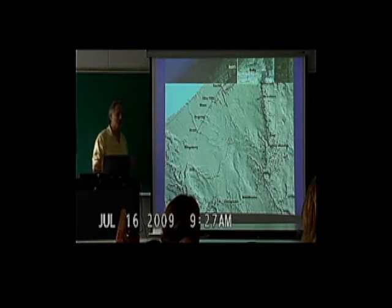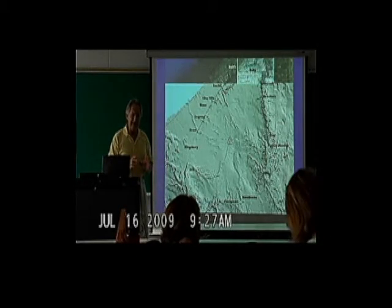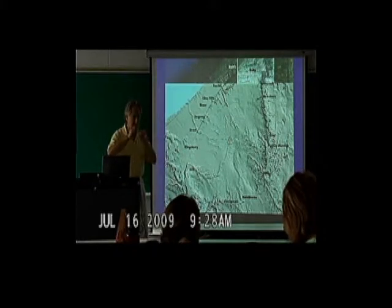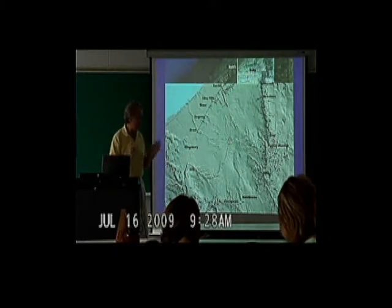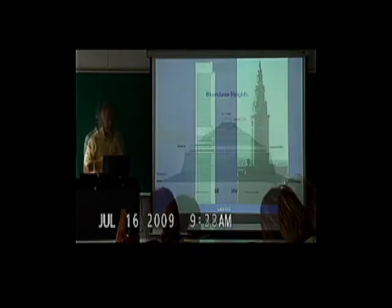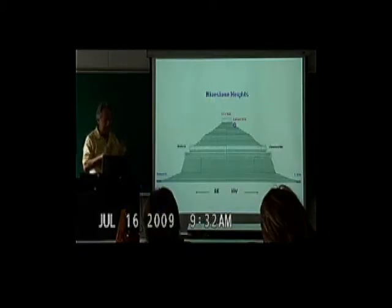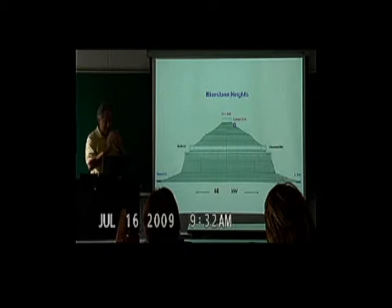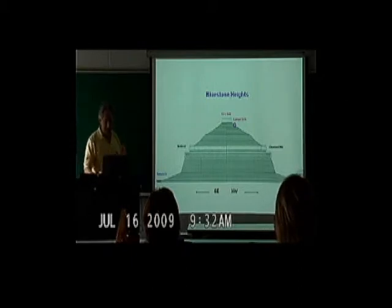Geologists call this a radial drainage pattern, and it is what you find out of a volcano. You get the streams running down from the apex of the dome. This is like a compressed cone. Why do we have this kind of cone-shaped geographic or topographic structure here on the east side?